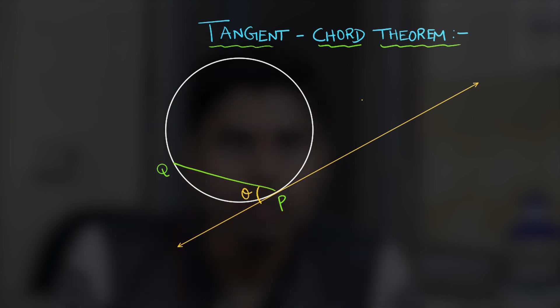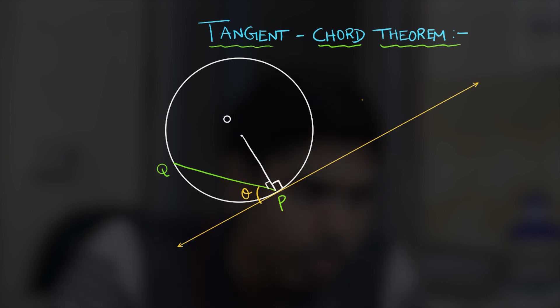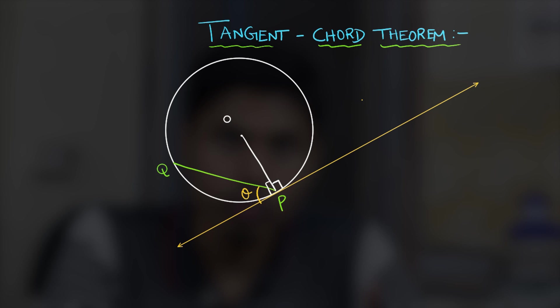When you consider obtuse angle this will not be true. So make sure that you consider acute angle and then if you drop the perpendicular from the center of the circle say O at the tangent we know the foot will be the point of tangency.